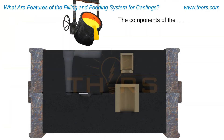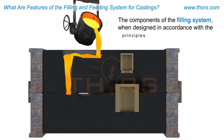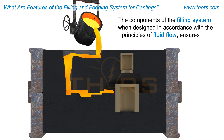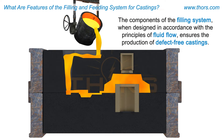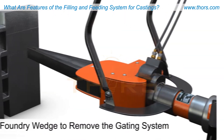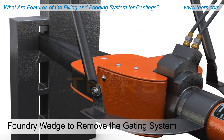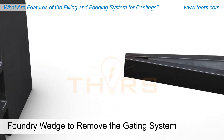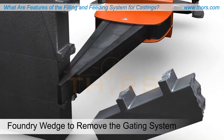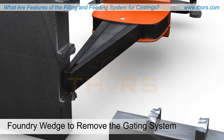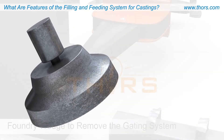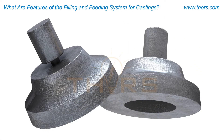The components of the filling system, when designed in accordance with the principles of fluid flow, ensures the production of defect-free castings. Care must be exercised in the use of filling and feeding systems, as they involve additional placement and removal costs. To improve yield, the metal used in the filling and feeding system should be minimized.